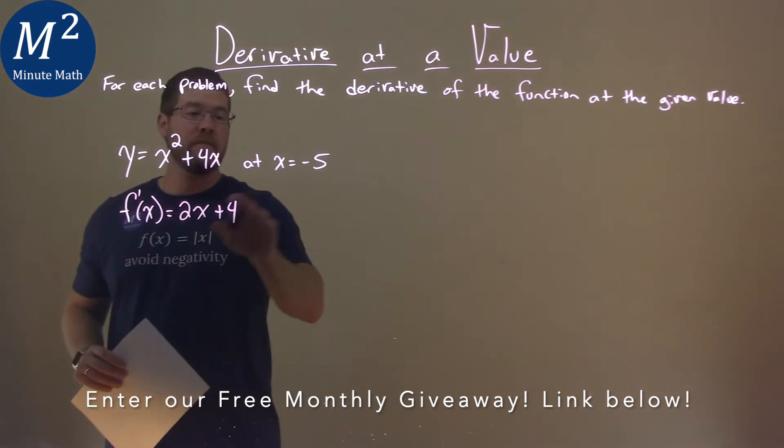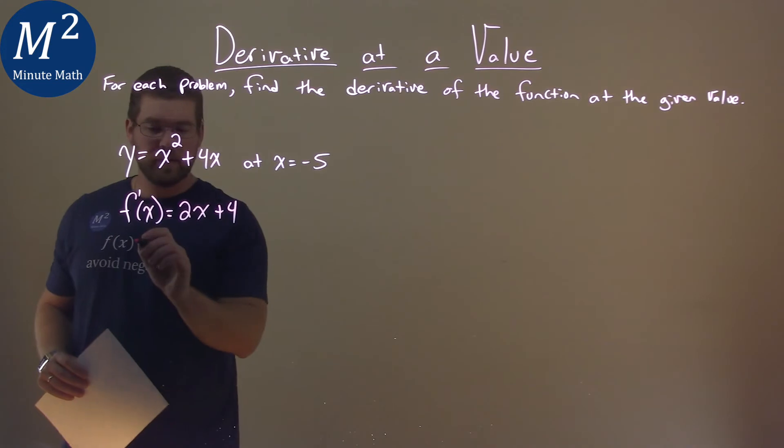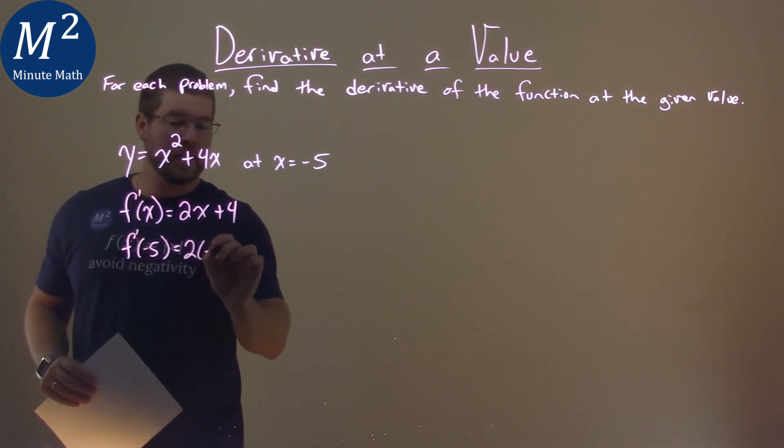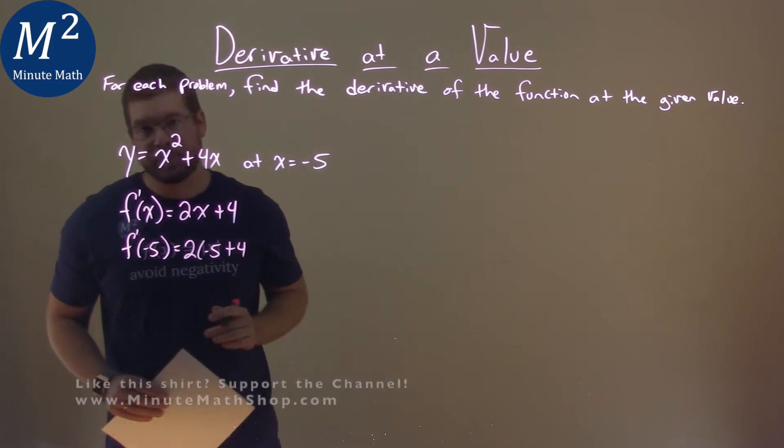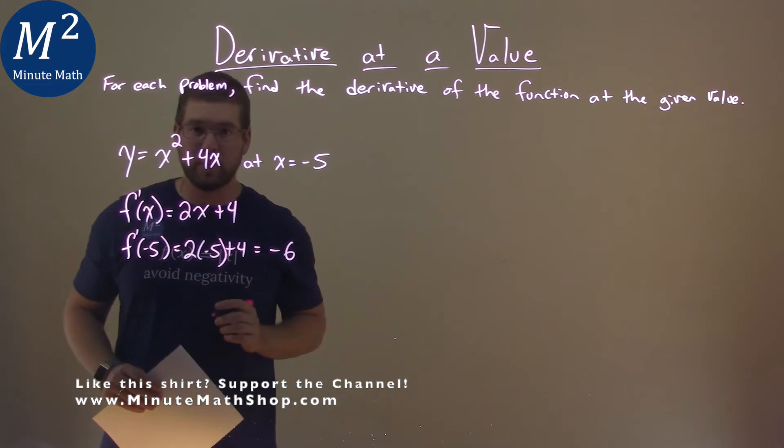Now we want to find the derivative at the value of negative 5. So we plug negative 5 in for x in our derivative. f prime of negative 5 equals 2 times negative 5 plus 4, and that comes out to negative 6 when we simplify it.